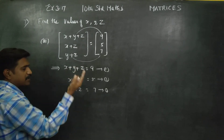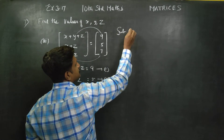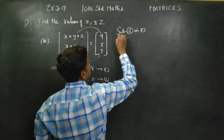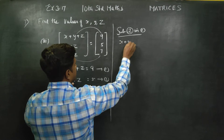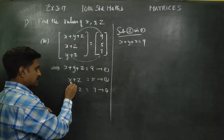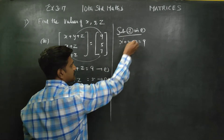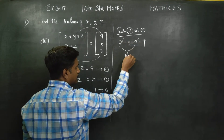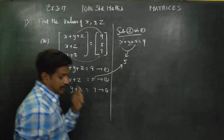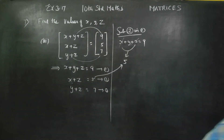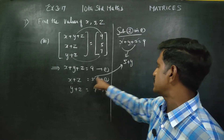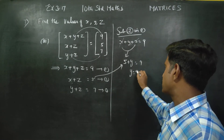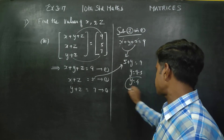Substitute equation 2 into equation 1. The first equation is x plus y plus z is equal to 9. X plus z is equal to 5, so substituting, y is equal to 9 minus 5, y is equal to 4.